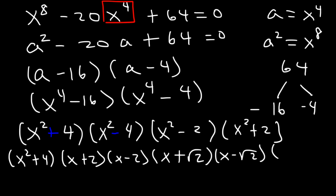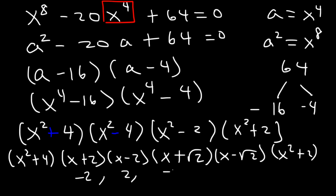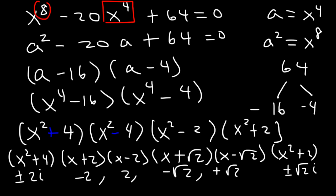We can't factor a sum of squares, so x squared plus 4 and x squared plus 2 cannot be factored over the reals — if we do factor them, we get imaginary numbers like x plus 2i and x minus 2i. So the real solutions are negative 2, 2, negative root 2, and positive root 2. If you want the imaginary solutions, it's plus or minus 2i and plus or minus square root 2 times i. There are 8 total solutions because the exponent is 8 — 4 real and 4 imaginary.